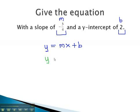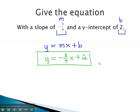Plugging in what we know, we get y is equal to m, or the slope, negative 3 fourths, x, plus b, which is 2. This is the equation of the line that will have a slope, negative 3 fourths, and a y-intercept of 2.